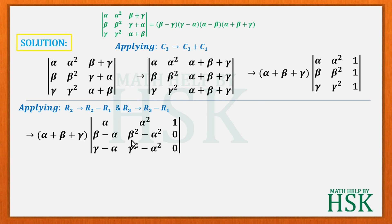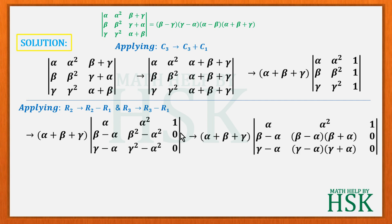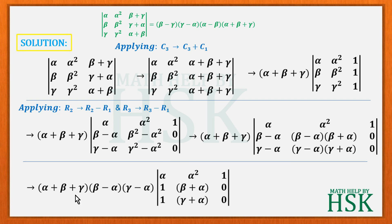Next, we factorize the expressions β²−α² and γ²−α² using the difference of squares: a²−b² = (a+b)(a−b). So β²−α² = (β−α)(β+α) and γ²−α² = (γ−α)(γ+α). Taking (β−α) common from row 2 and (γ−α) common from row 3, the determinant becomes (α+β+γ)(β−α)(γ−α) times the determinant with rows (α, α², 1), (1, β+α, 0), (1, γ+α, 0).